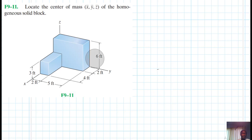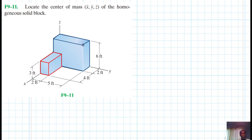Let's start. I'm going to divide this solid into two parts: block one and block two. So this first portion is block one, and this other one is block two. Let's label them — this is one, this is two.